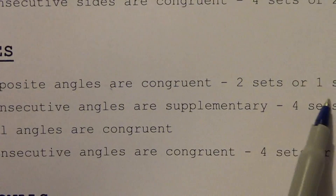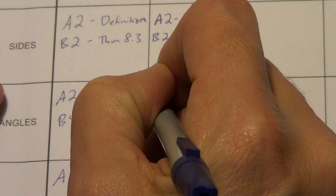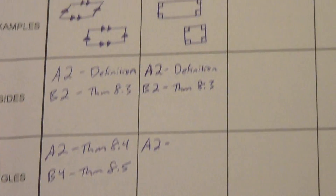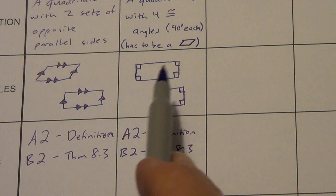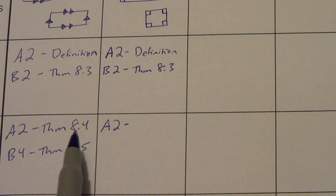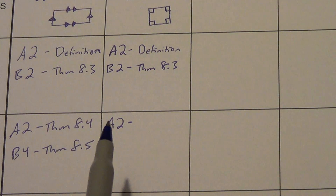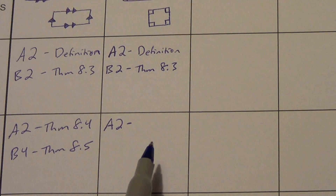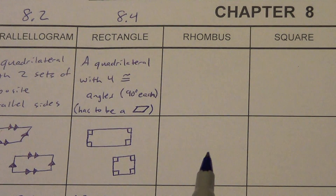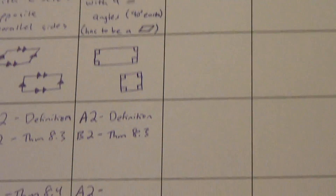Under angles: opposite angles are congruent — two sets. Opposite angles are definitely going to be congruent, so A2 is two sets. There are two things you could cite here: theorem 8.4, which says in a parallelogram there are two sets of opposite congruent angles, or the definition itself — the definition says it's got four congruent angles, so definitely the opposite angles are congruent. I'm just going to write 'definition.'